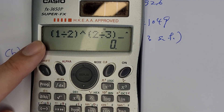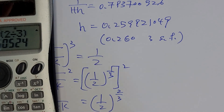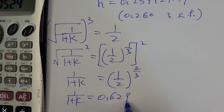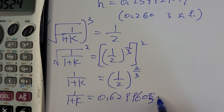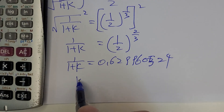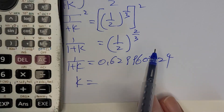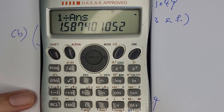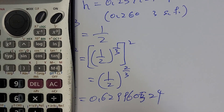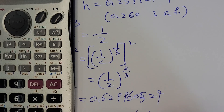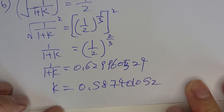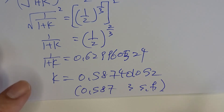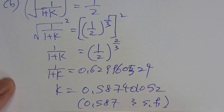Using the calculator, (1/2) to the power 2/3 is approximately 0.629960524. Therefore k equals 1 divided by 0.629960524 minus 1, giving k approximately 0.587. So the final answer is k approximately 0.587, and that is the end of question nine and the end of this paper.